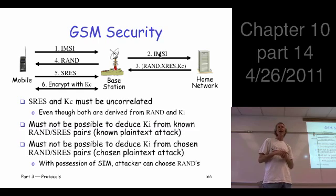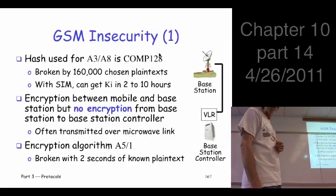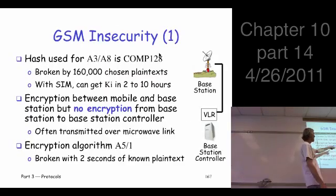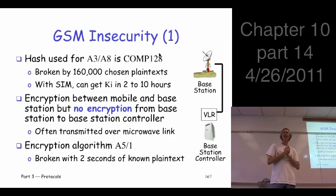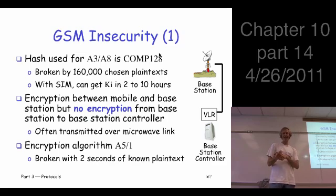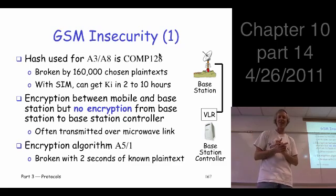It takes two to ten hours to get that much information out of one of these phones. That's a long time to just be sitting there doing this. But is there anybody who might have the phone long enough to do an attack like this? Sure — whoever sold you the phone. They probably had it for days. In principle, they could have done this attack, figured out what KI is, and created a clone of your phone before they sold it to you. And they can get all the free phone calls they want.